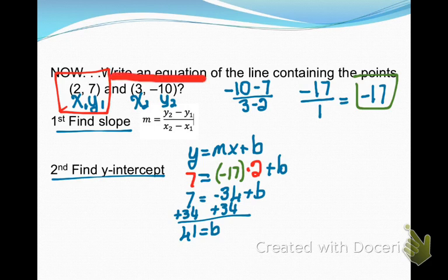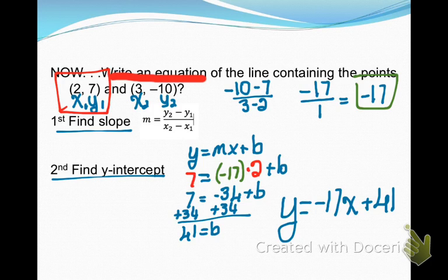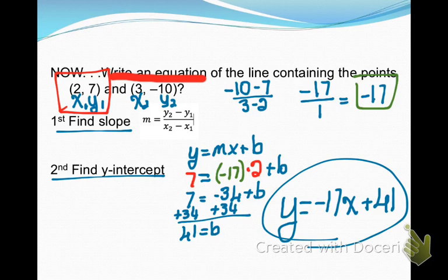Now it says write an equation. So I'm going to say y equals, insert my slope, which is negative 17, times x, plus my y-intercept. This is the equation of a line that goes through those two points. Again, pause it and go back if you need to.